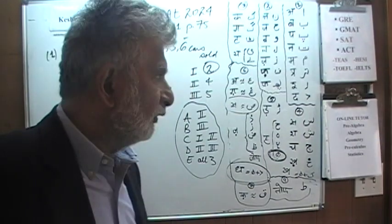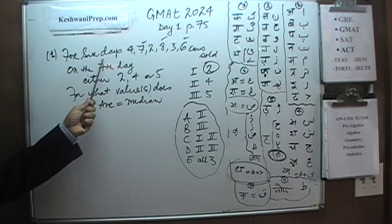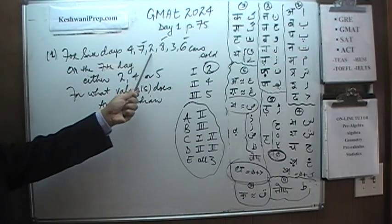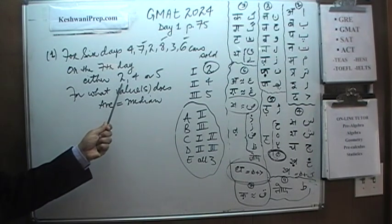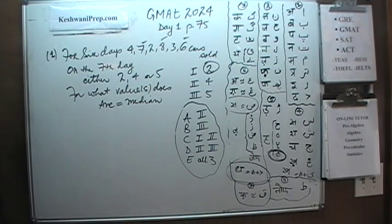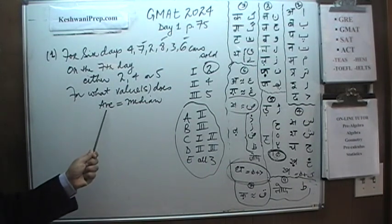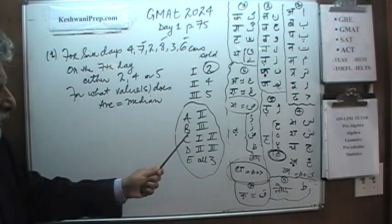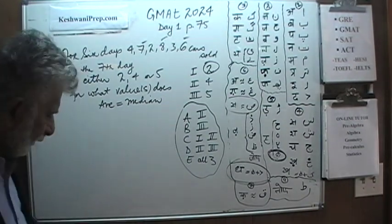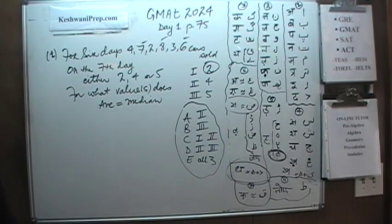Here's question one. We have a car dealership and we are told that for the first six days of the week they sold 4, 7, 2, 8, 3, and 6 cars. On the seventh day we are told they sold either 2 cars, 4 cars, or 5 cars. The question is: for which of these three values does the average equal the median? The answer choices are: one, two, and three. Pause the video now and try it yourself.